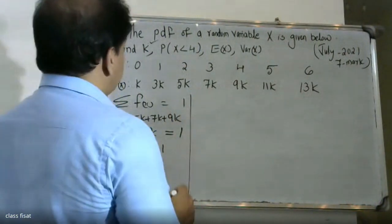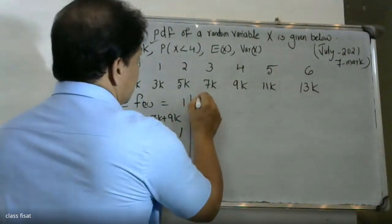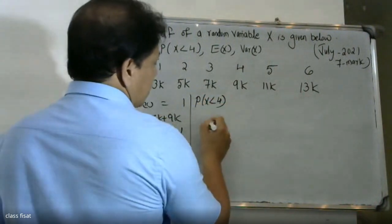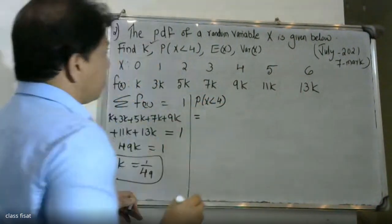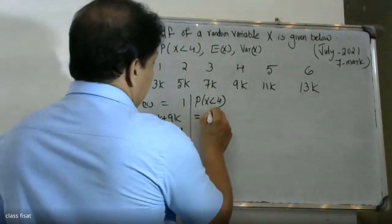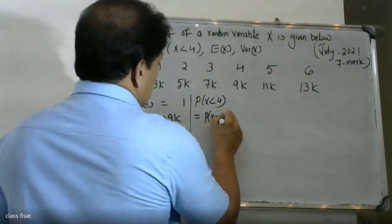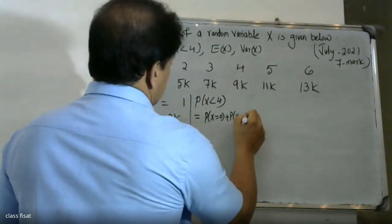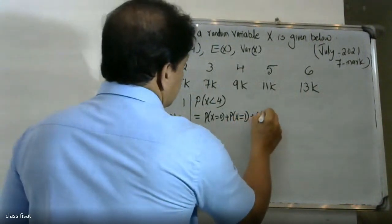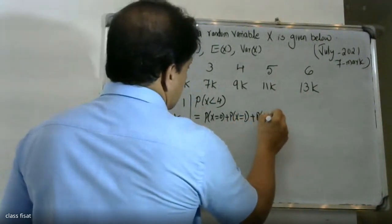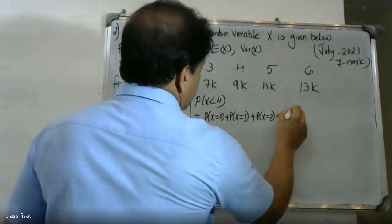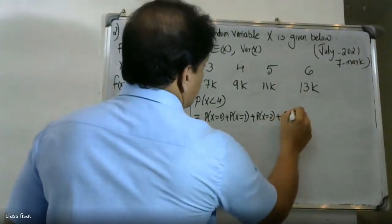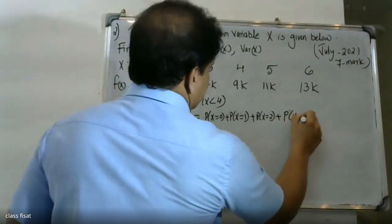For the probability of x less than 4: probability of x less than 4 equals probability of x equal to 0, plus probability of x equal to 1, plus probability of x equal to 2, plus probability of x equal to 3.